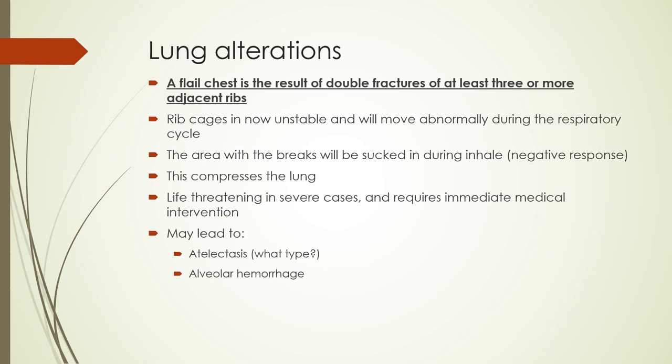Alterations that go along with flail chest: it results from double fractures of at least three or more adjacent consecutive ribs — that's the minimum. The big thing is the double break; if it's just a single break it won't cause flail chest. These are pretty traumatic situations, very rare to happen spontaneously unless someone had severe osteoporosis. The rib cage becomes very unstable and moves in an opposite pattern to the respiratory cycle — as you inhale and the rib cage expands outward, the double-break area is sucked inward.